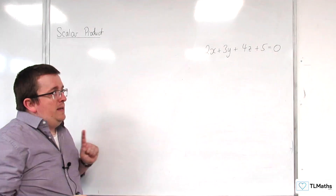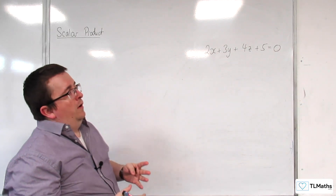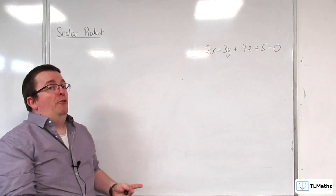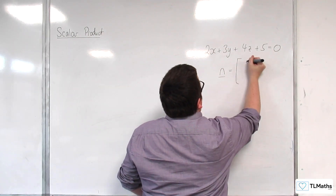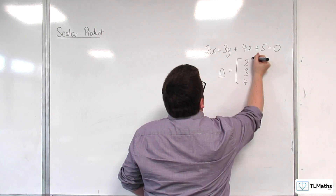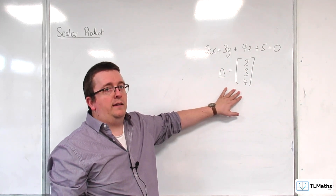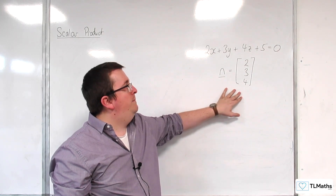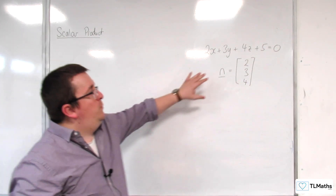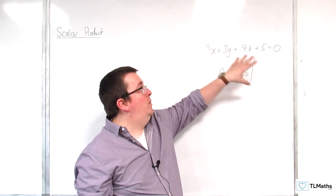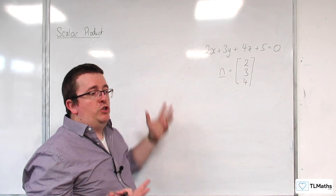I briefly mentioned that the coefficients of x, y, z form a normal vector to the plane. We refer to that as n, the normal vector to the plane: (2, 3, 4), which is a vector perpendicular to the plane. What I want to reintroduce here is: how can we get to this equation of the plane? Why does that make sense? Where does it originally come from?